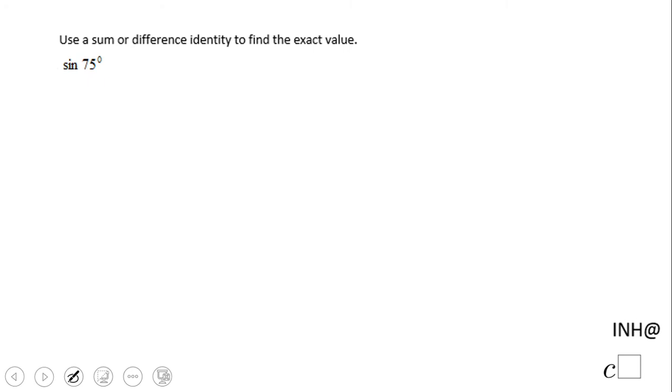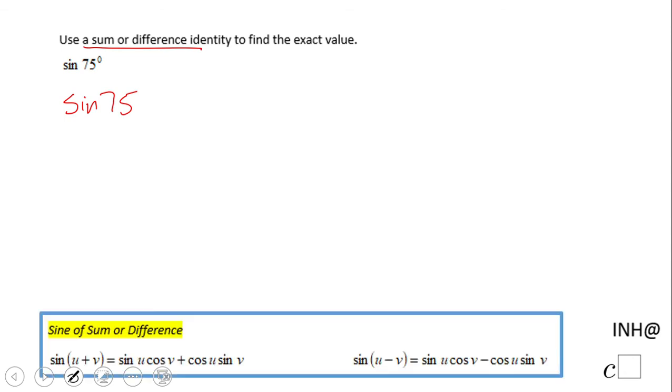Welcome or welcome back to NHelpAtCSquared. In this video we're gonna find sin 75° using sum or difference identities and we'll see which one. First of all, we have the sine, so we have these two formulas.